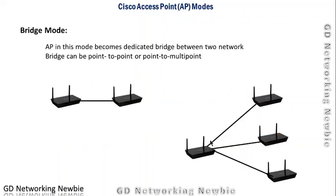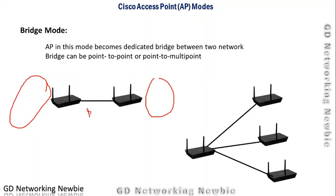In bridge mode, the access point becomes a dedicated bridge between two networks. It can operate in point-to-point or point-to-multipoint fashion — connecting one network on one side to another network on the other side, or linking multiple networks simultaneously.